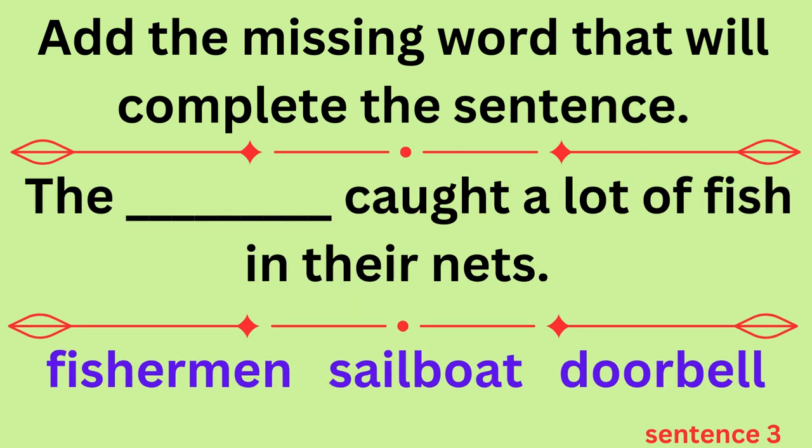Sentence three: the blank caught a lot of fish in their nets. Would the answer be fisherman, sailboat, or doorbell?